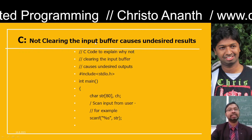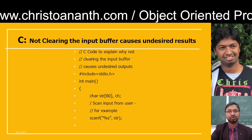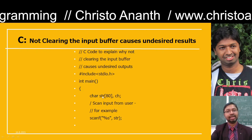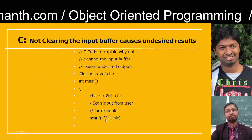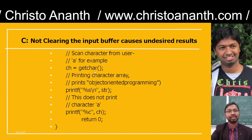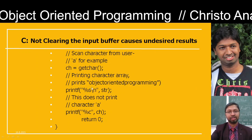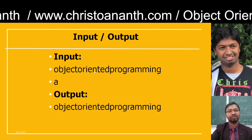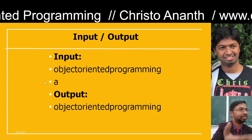This is a C code to explain why not clearing the input buffer causes undesired outputs. #include stdio.h, in main function, character string str of size 80, then ch. scanf with %s for str — this scans a string from the user. Then character ch equals getchar(). This is going to print the character array — printf %s \n str. But in reality this does not print the character, because printf %c ch, return 0 — if you input 'object oriented programming' then 'a', it will print only 'object oriented programming' because you are not going to clear the input buffer.